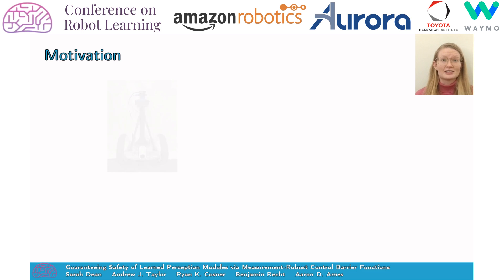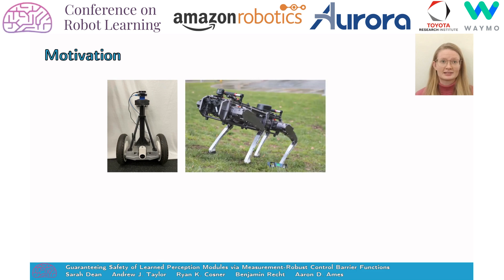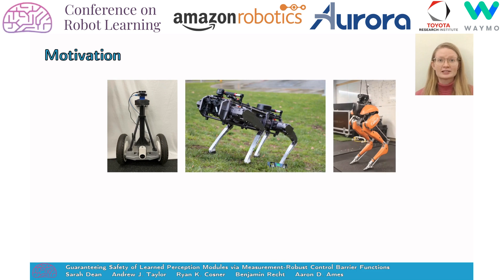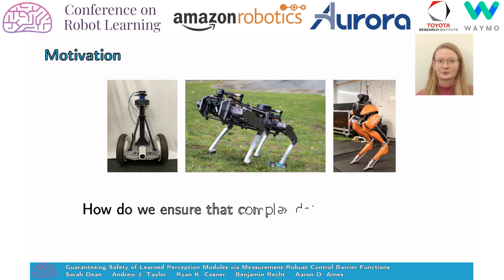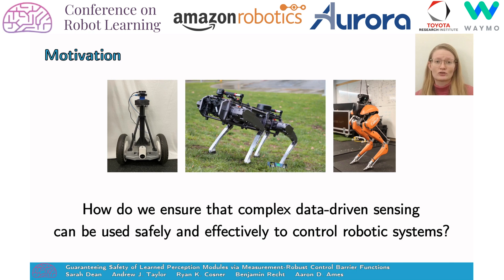Cheap sensors and increasing storage and computational power enable robotic systems to incorporate increasingly complex sensing modalities, like cameras. Moving from traditional sensors to more complex domains gives rise to challenges of calibration, or in other words, a misspecification of the measurement model. How do we ensure that complex and data-driven sensing can be used safely and effectively to control robotic systems?